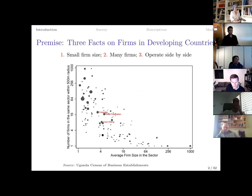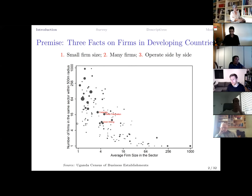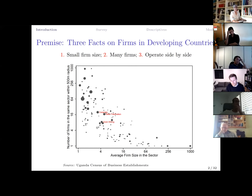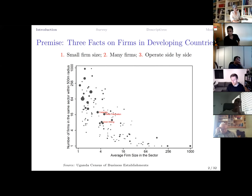Using data from the census of business establishments in Uganda, every dot in this picture is a sector. On the x-axis we have average firm size, and on the y-axis a measure of firm density — we draw a 500-meter radius circle around each firm and count how many other firms of the same sector are nearby. In carpentry, the average firm has four employees but there are usually another 20 carpenters within 500 meters.